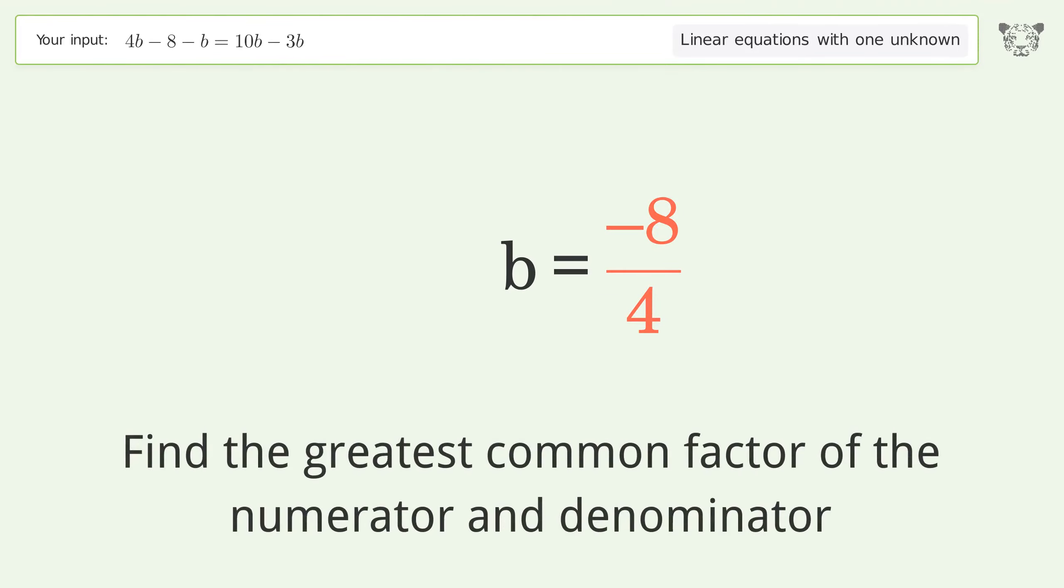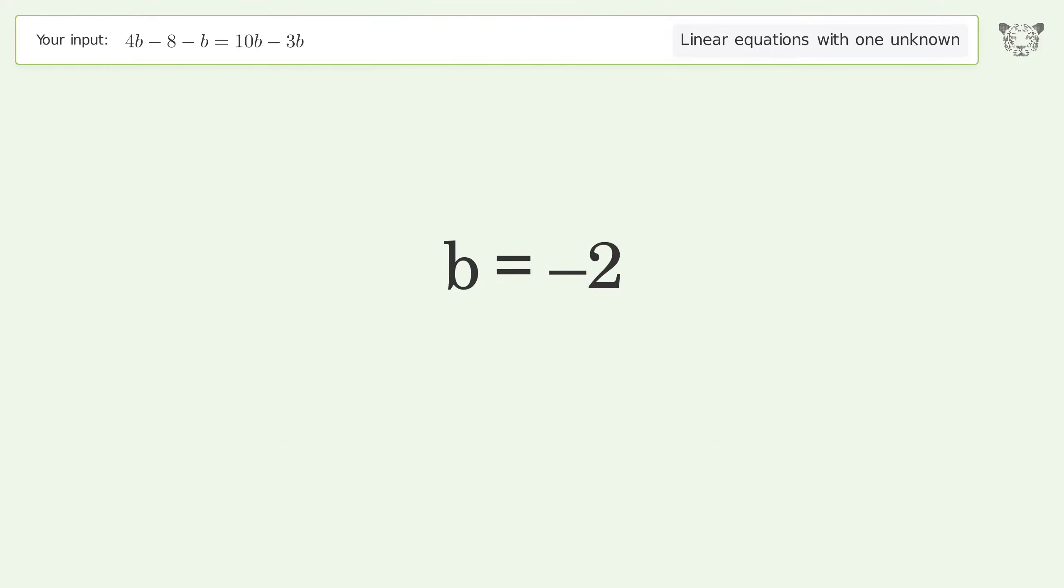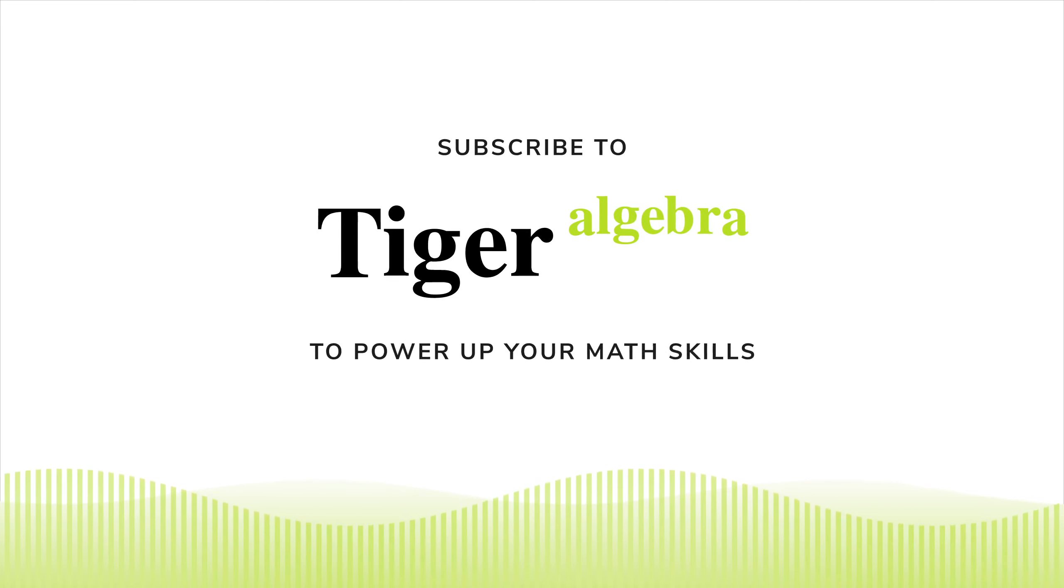Find the greatest common factor of the numerator and denominator, factor out and cancel the greatest common factor. So the final result is b equals negative 2. Thank you for watching.